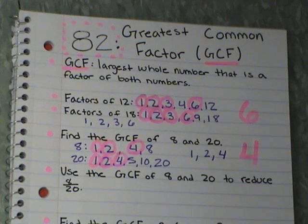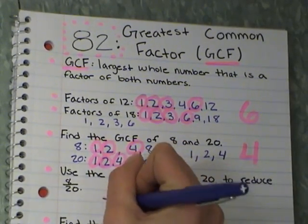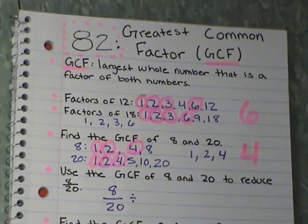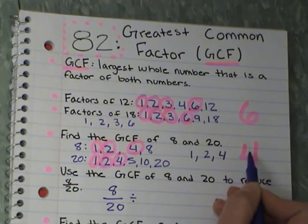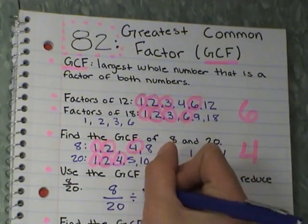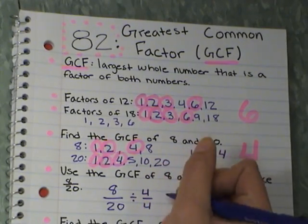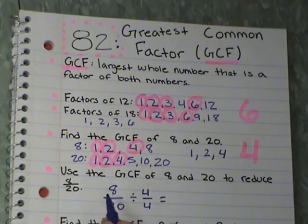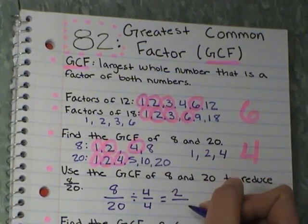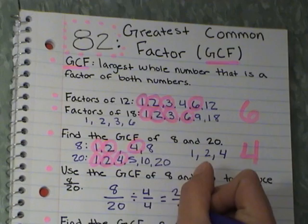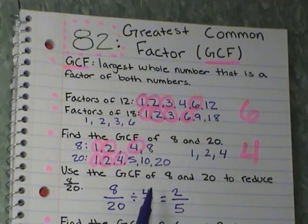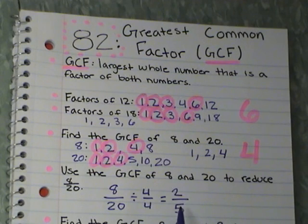And this is like yesterday's lesson, 81, where we had to divide by a 1. So we're going to take 8 over 20. Now instead of dividing by 2 over 2, we're going to pick the GCF to divide by. And of 8 and 20, we found out it is 4. So I'm going to divide by 4 over 4 to reduce. And we reduced yesterday. So 8 divided by 4, 2. 20 divided by 4, 5. So 8 20ths reduced by 4 over 4 gives me 2 fifths.